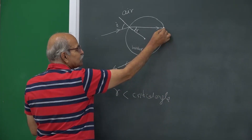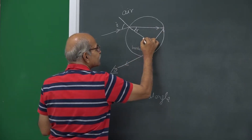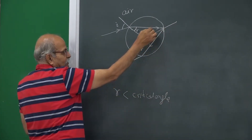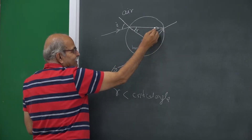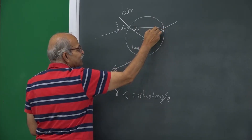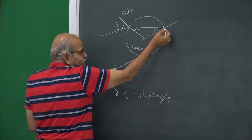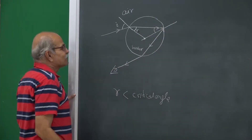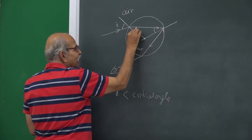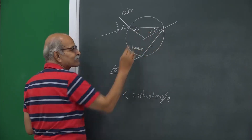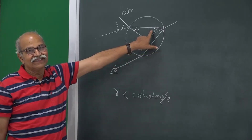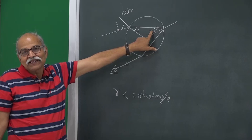For the internal reflection surface, you again join the center to get the normal. For this water-to-air interface, this is the angle of incidence. Because the center gives two equal radii, if this angle is r, this angle is also r, and since r is less than the critical angle, this angle too is less than the critical angle — therefore it is not total internal reflection.